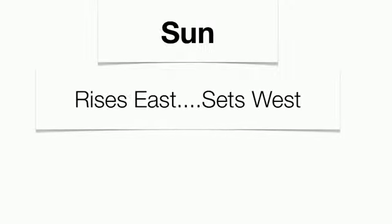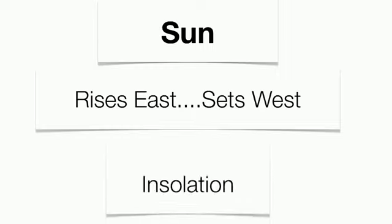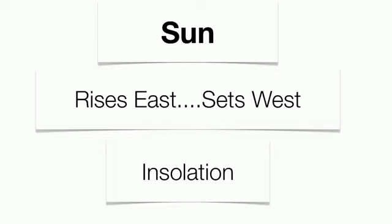Before we get started, by now you understand that the sun is going to be the main star in our solar system. Everything revolves around the sun. Here on Earth, the sun is going to rise in the east and set in the west based upon the Earth's counterclockwise rotation. The sun is going to emit energy called insolation. Insolation stands for incoming solar radiation, and essentially it's going to be the sun's energy.